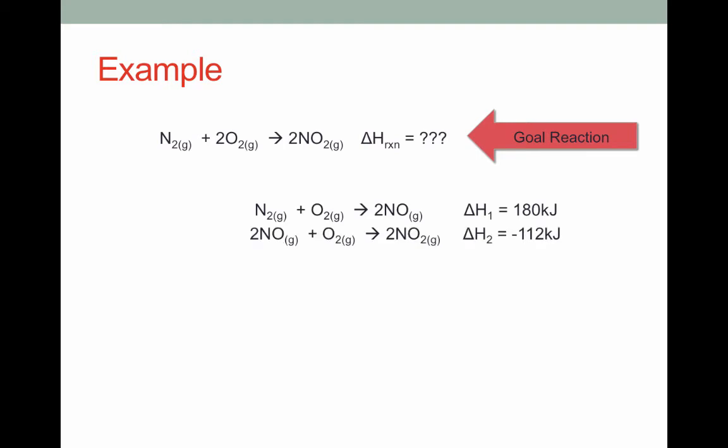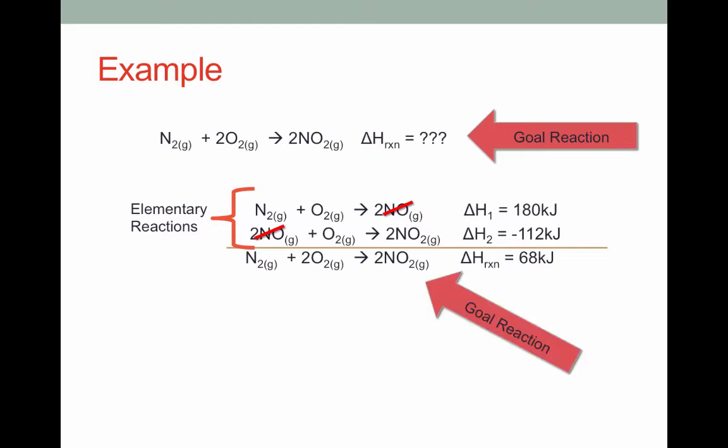Here's two steps that we might run in order to get the overall enthalpy change. These are called elementary reactions. They're smaller steps that we can add up to give us a larger process. Notice that if we add these up as you would mathematically, we can start by canceling anything that appears on each side of the yield sign, just like you'd cancel anything that appears on both sides of an equal sign, and from there we can sum our reactions. Notice in the reactants we're left with one nitrogen and two oxygens, and in the products we're left with two nitrogen dioxides. Notice that the reaction that we've gotten as the sum is the same as our goal reaction. Likewise, the delta H for this goal reaction is the sum of the delta H's of the two steps. I've added the delta H of elementary step one to the delta H of elementary step two to get the overall enthalpy change for this goal reaction.